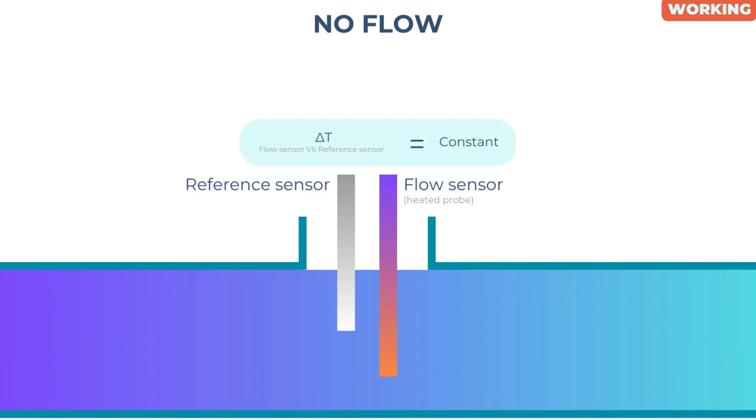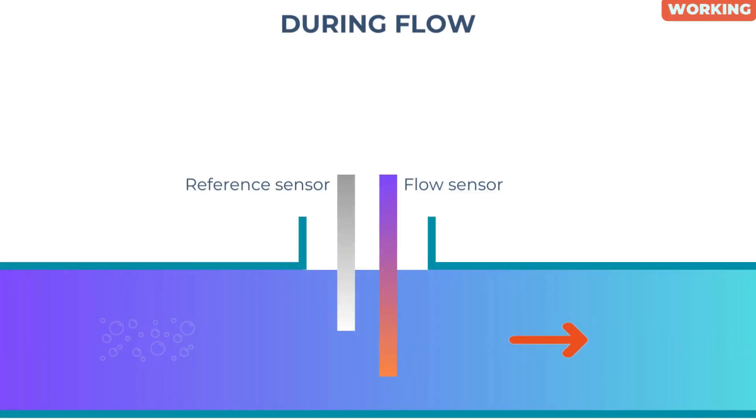During gas flow, the gas molecules transport heat away from the flow sensor and as a result the sensor cools and energy is lost. The circuit balance disrupts and the temperature difference between the flow sensor and the reference sensor changes immediately.